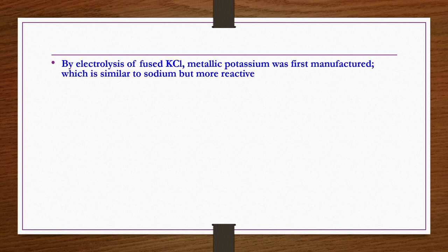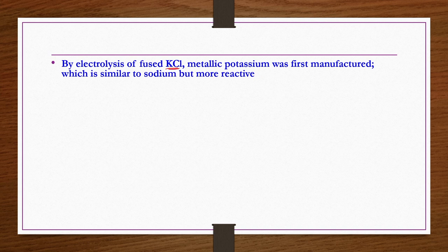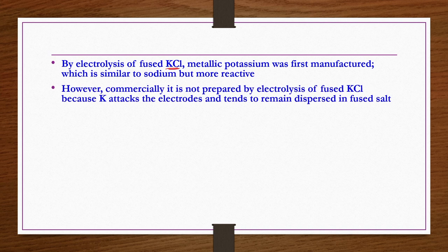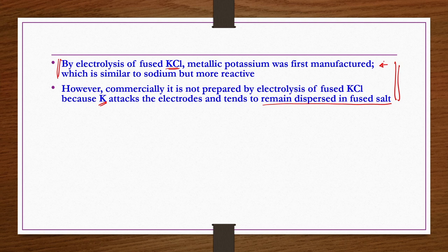How do you get metallic potassium? Potassium from saline or brine solutions is mostly in the form of potash salts like KCl or K₂SO₄. To produce metallic potassium, electrolysis of fused KCl is one method — similar to sodium but potassium is more reactive. However, this method is not followed commercially because the potassium produced attacks the electrodes and remains dispersed in the fused salt.